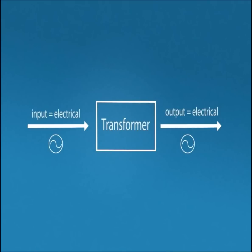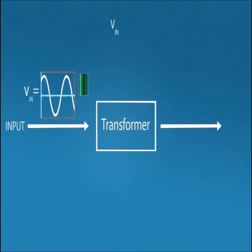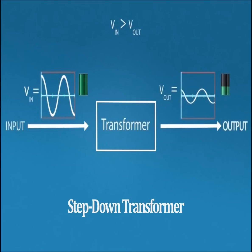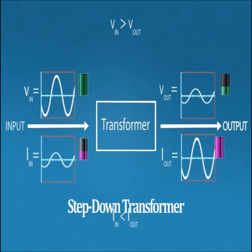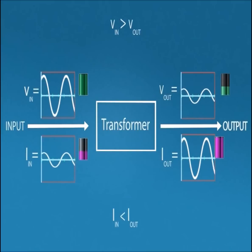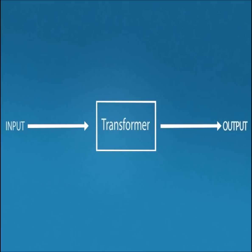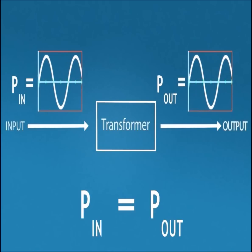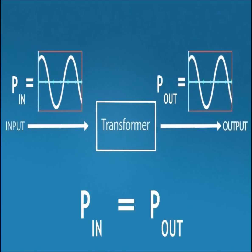Primarily transformers are used to change the level of voltage and current. For example, in case of step-down transformer, the input high voltage is transformed to a low voltage whereas the magnitude of current increases because input and output power has to remain the same.